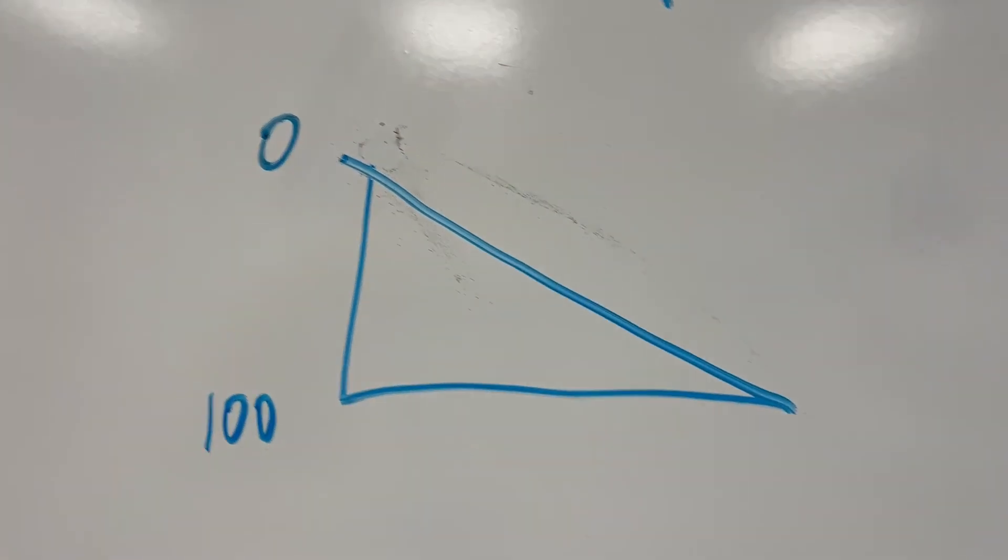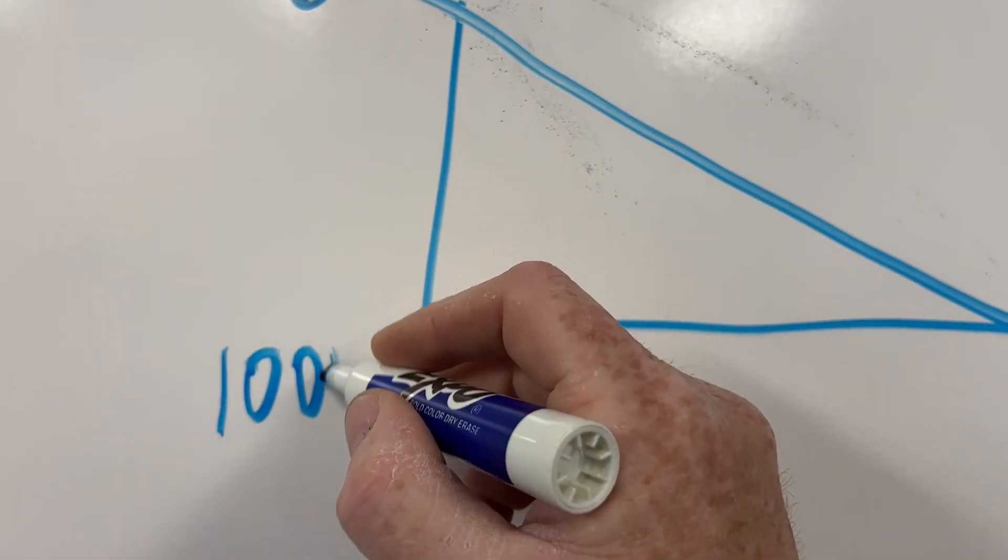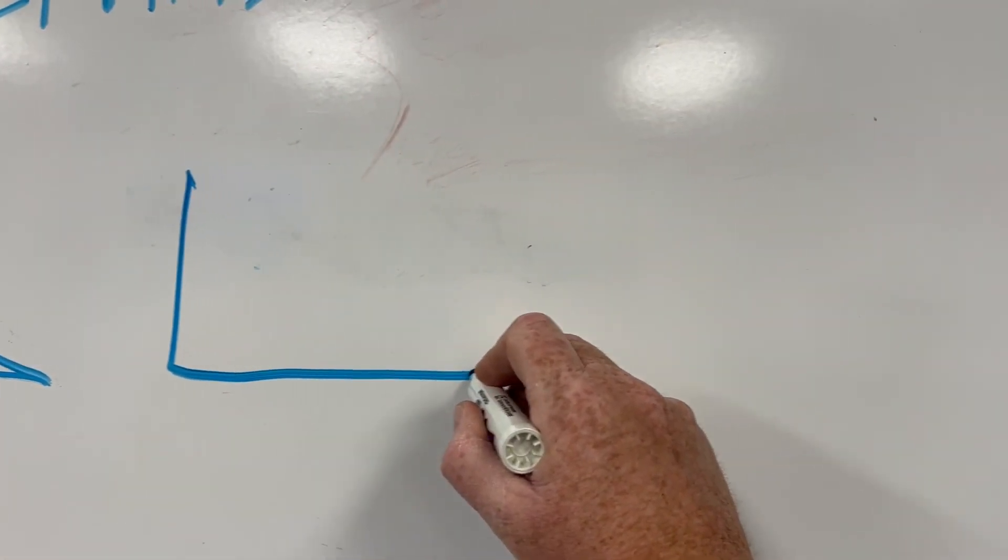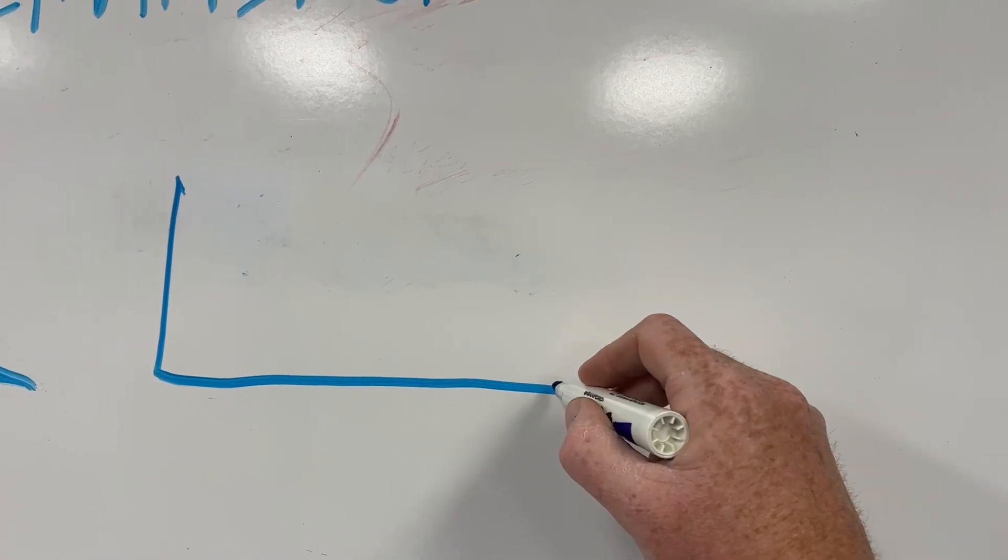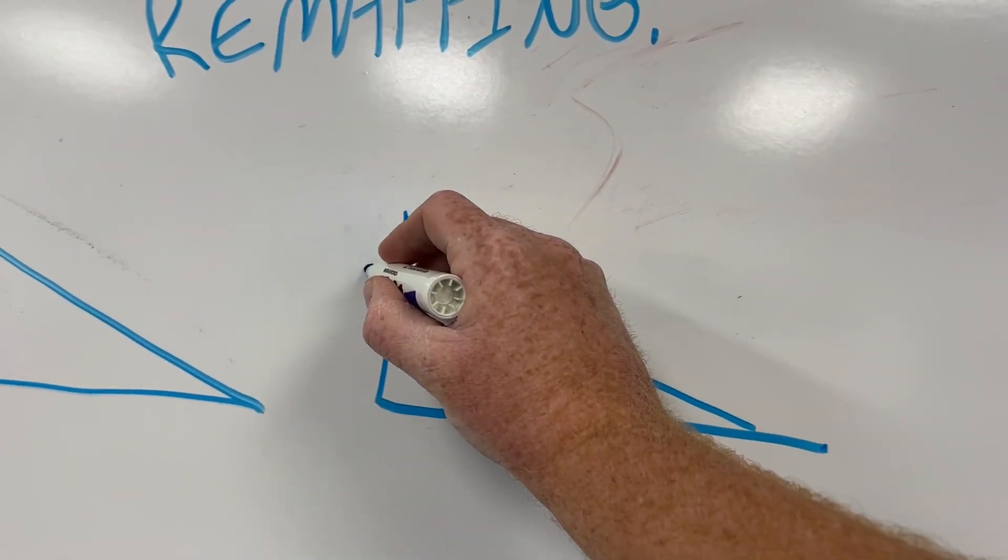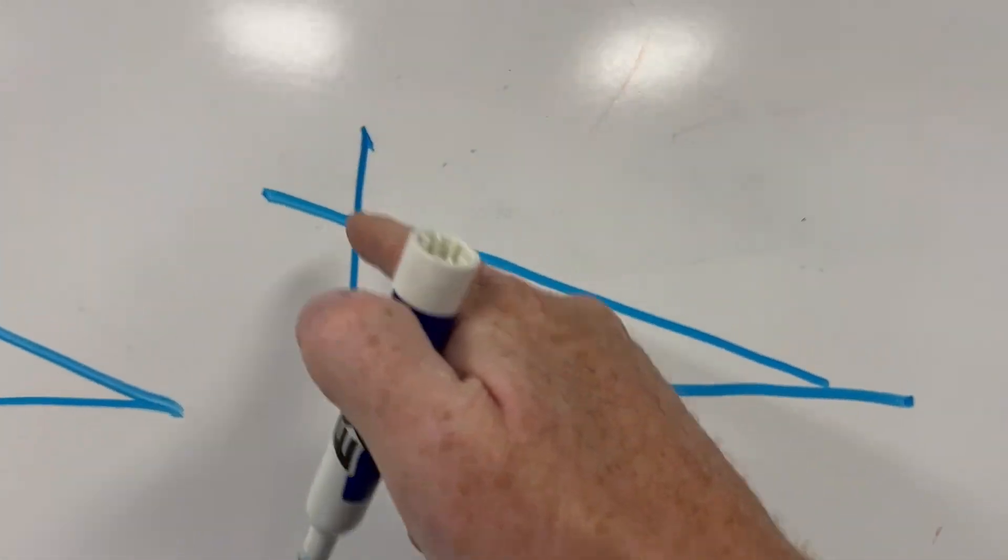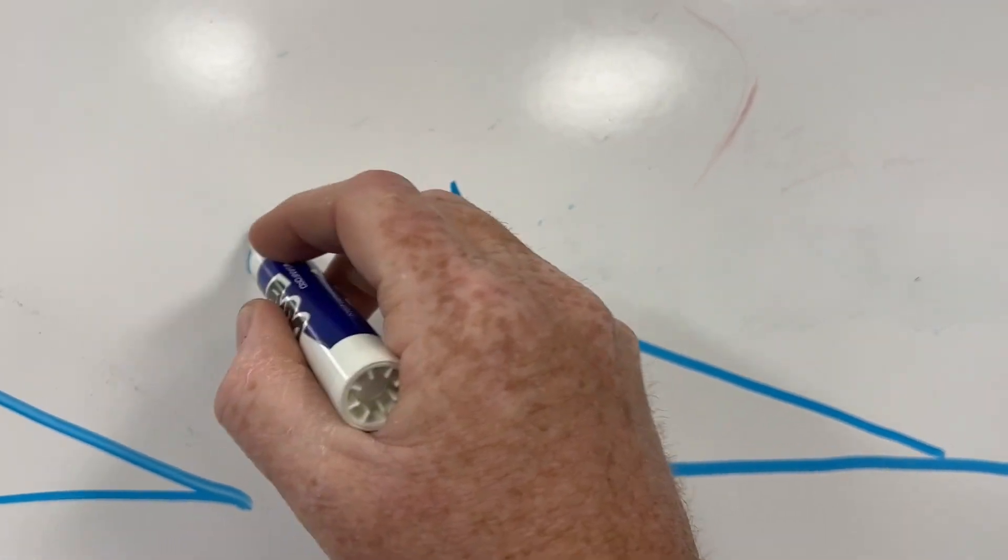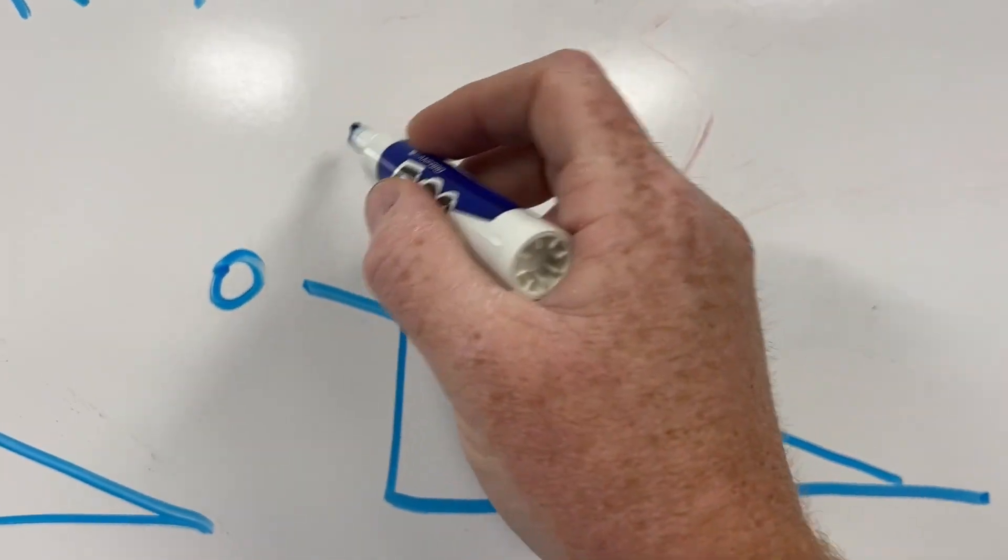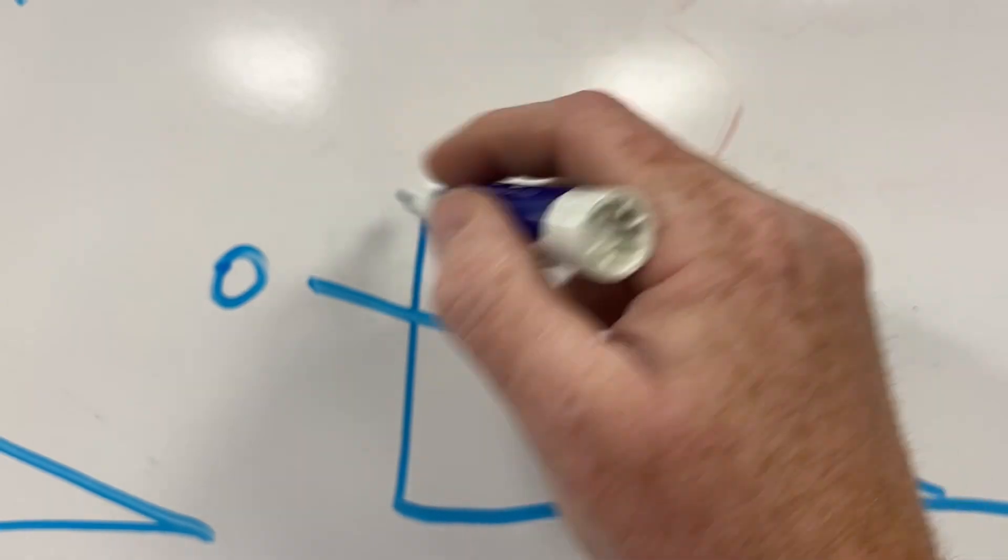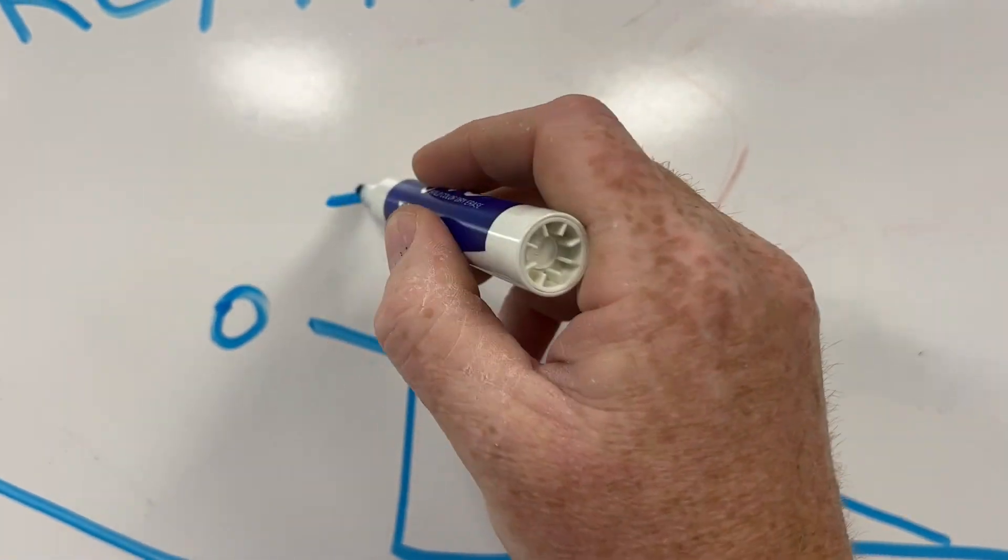If you turn on max regen though, it changes that zero point to down just a little bit—it's only like an inch or something from the top. This becomes your new zero point. This becomes—I'm just going to throw an arbitrary number on it because I don't know what degree it is or anything—but we'll say this is negative 10, and this is still 100% throttle.